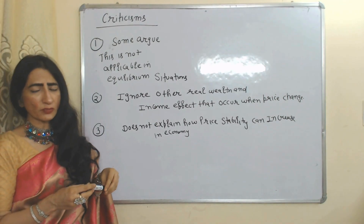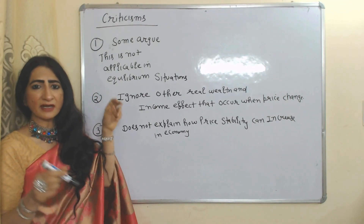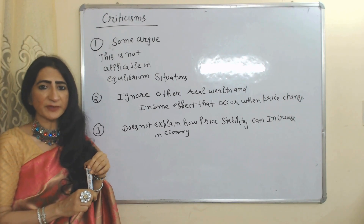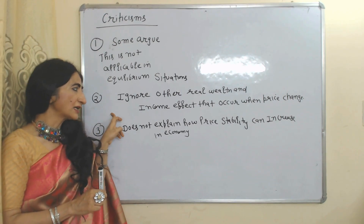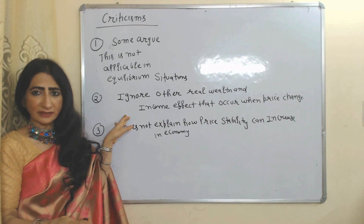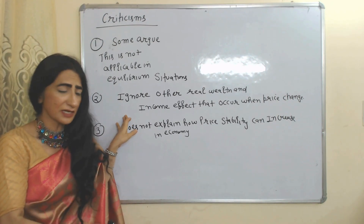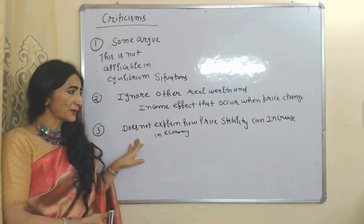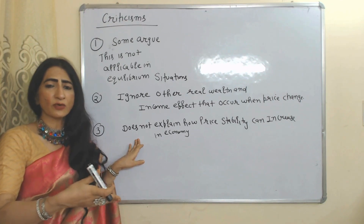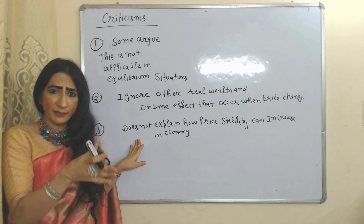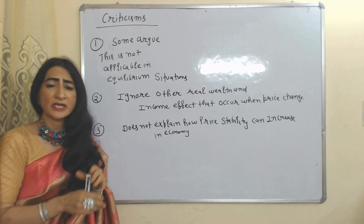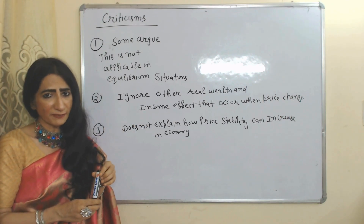Now we are going to talk about criticism. Some people say the real balance effect is not applicable in equilibrium situations. The real balance effect ignores other real wealth and income effects that occur when prices change. Also, the real balance effect doesn't explain price stability — it only talks about increases or decreases in price but doesn't explain how price stability can be achieved in the economy.